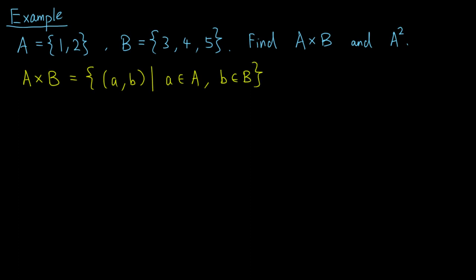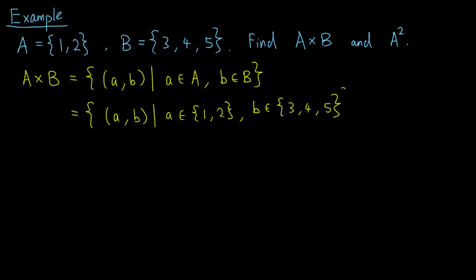Plugging in the sets A and B, we have that the Cartesian product is the set of ordered pairs (a, b), where a is an element of {1, 2} and b is an element of {3, 4, 5}. Here we can list the elements one by one by considering all the possible cases.